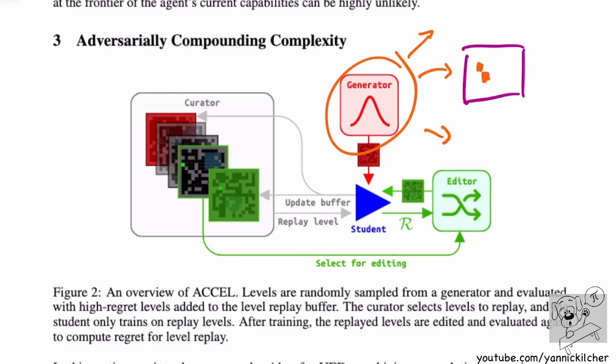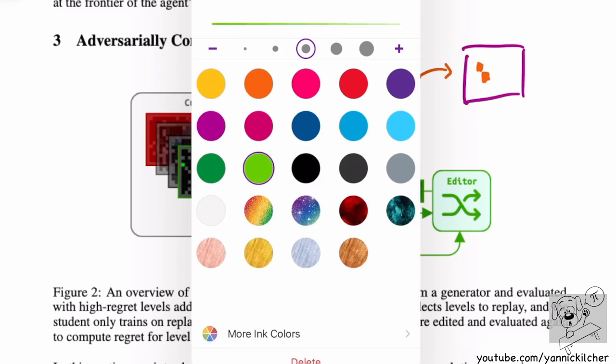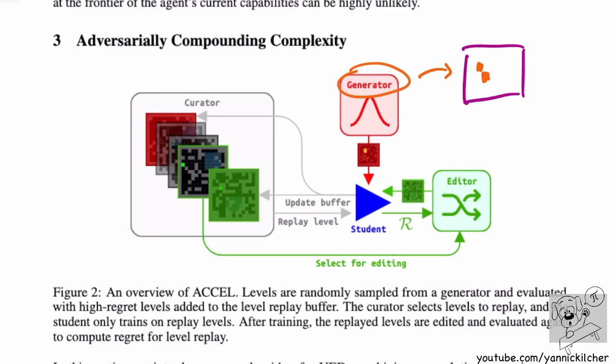So we need to somehow filter and curate the levels we generate. We have a generator that gives us a starting bunch of levels. These go to the student — a single agent, not a family of agents. What we do is let the student run on each level and see how well it does. We measure its regret, which is essentially an estimate of how far the student is from the optimal policy on that particular level. We want to strictly select for levels that have high regret — levels where the student can still learn something.